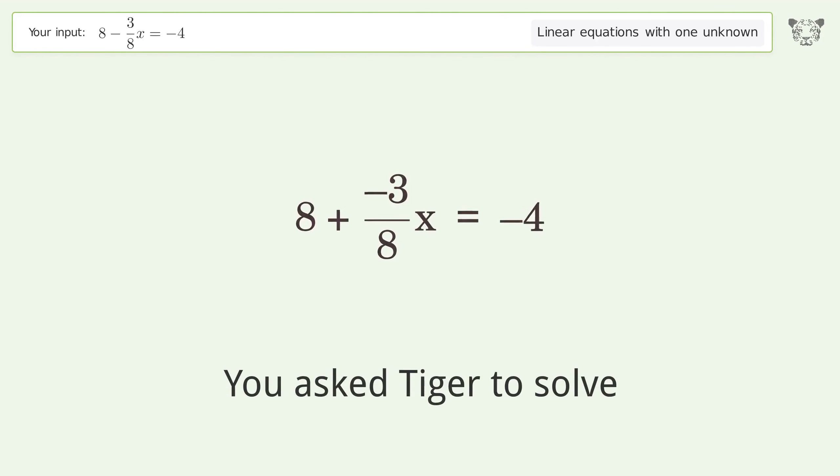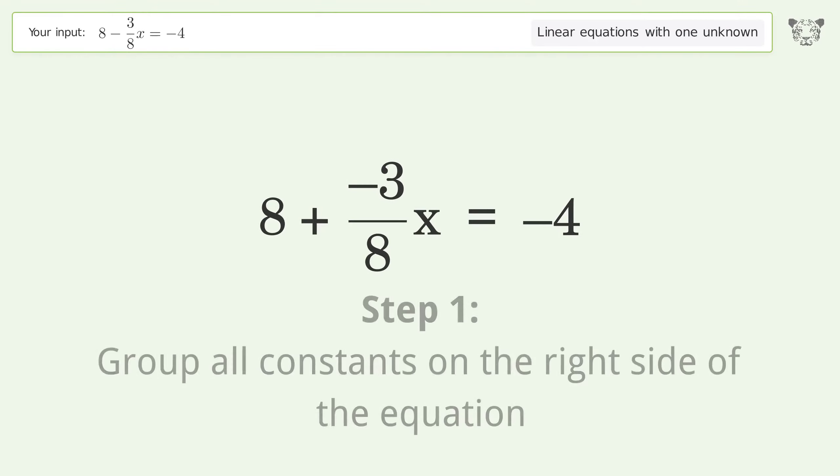You ask Tiger to solve this. This deals with linear equations with one unknown. The final result is x equals 32. Let's solve it step by step. Group all constants on the right side of the equation.